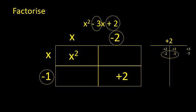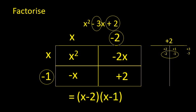Let's check we get the correct answer. I get minus 2x in one box and minus x in the other. If I collect all of those terms, I do indeed get my original expression — minus 2x and minus x add together to give minus 3x. So my final answer: the first bracket is x minus 2 (the two terms above the window), and the next bracket is x minus 1 (the two terms at the side of the window). I have finished factorising the original expression into two brackets.